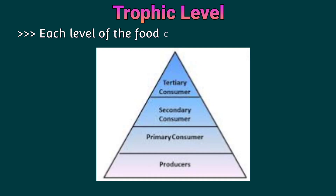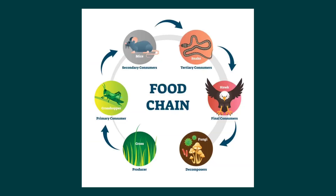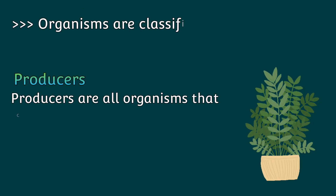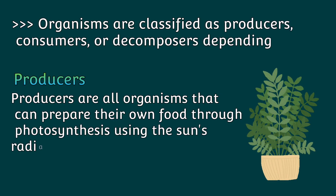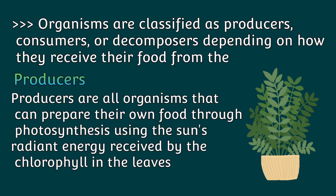Trophic level: each level of a food chain forms a trophic level. Observe the food chain in this picture. Organisms are classified as producers, consumers, or decomposers depending on how they receive their food from the environment.